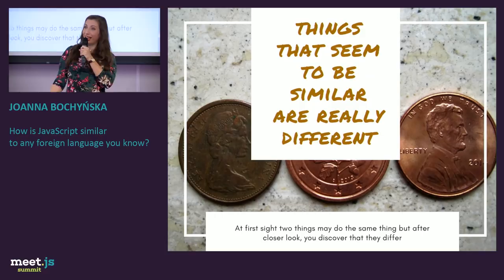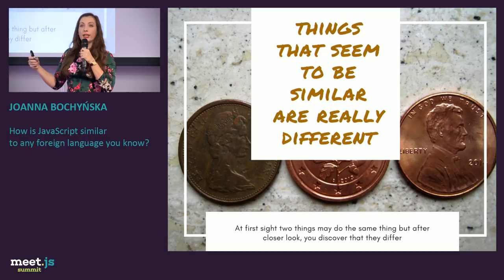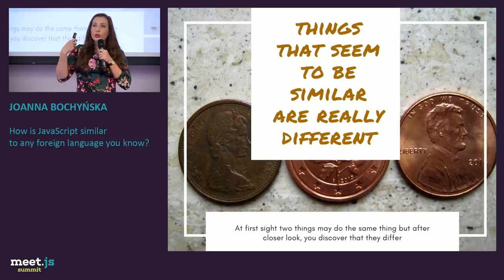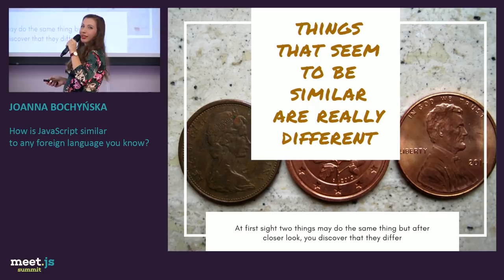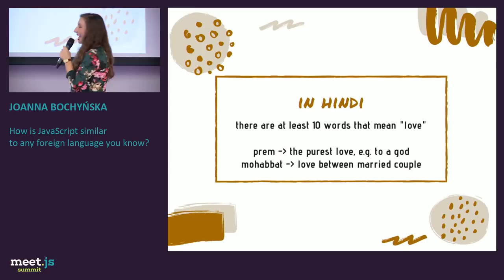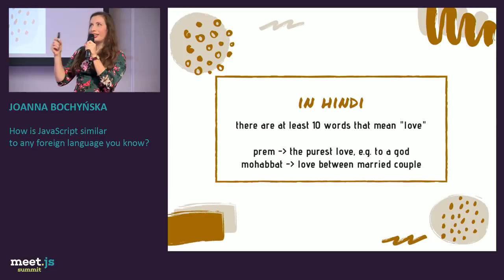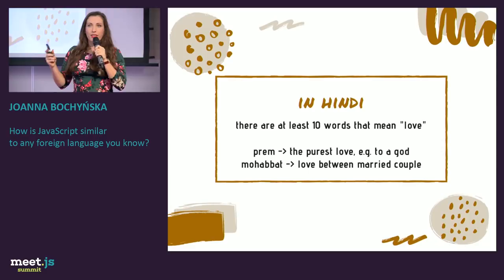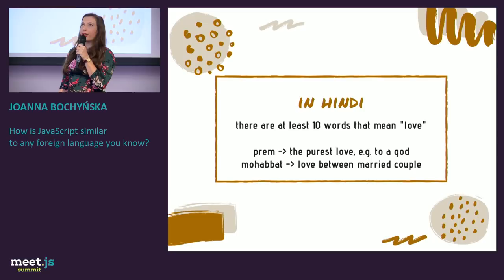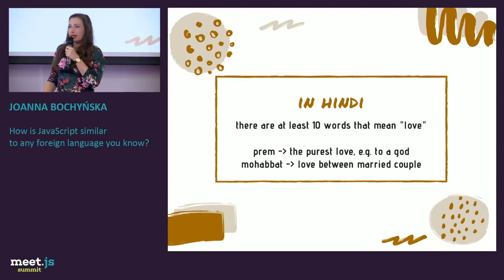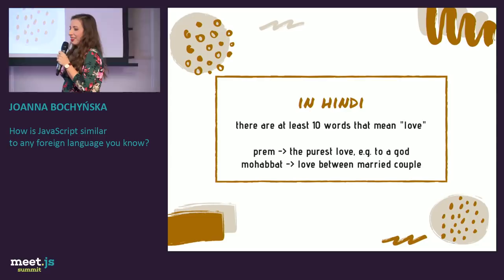The next thing is the opposite — the magic of languages: things that seem to be similar are actually very different. At first sight two things may appear to be the same, but after a closer look you discover that they differ. The example is from my favorite language, Hindi. Hindi is a synonymous language — it may have 10, 20, or 30 words for one concept that all translate the same way in the dictionary.